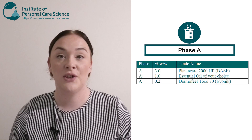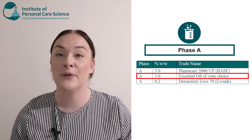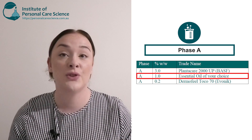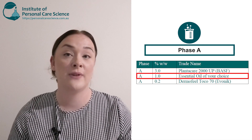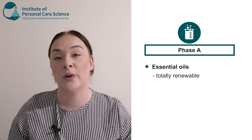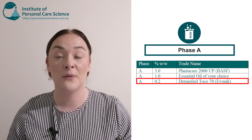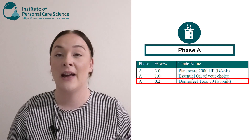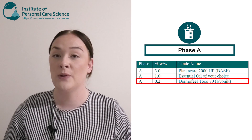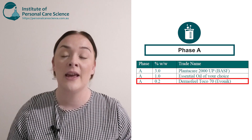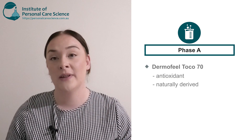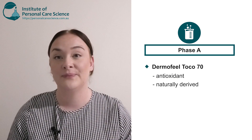Next I've chosen to use an essential oil for a little bit of scent. You can of course choose a naturally derived fragrance, but remember essential oils are from plant sources so they're totally renewable. Because I'm using a plant oil, I have included an antioxidant — I've chosen the Dermafil Toco 70, which is a naturally derived form of tocopherol.